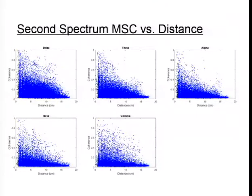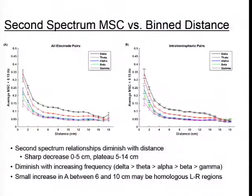When we look at second spectrum coherence versus distance for each individual frequency band, you get a distribution where each point represents a single contact pair across the nine patients, shown for five different frequency bands. We binned values into one-centimeter distance bins and took averages to see how relationships change. The plot on the left shows results from all electrode contact pairs; the plot on the right shows just intra-hemispheric contact pairs.